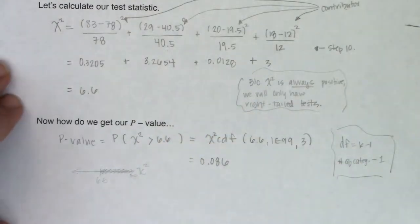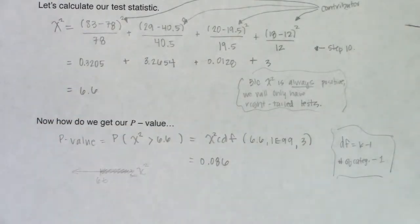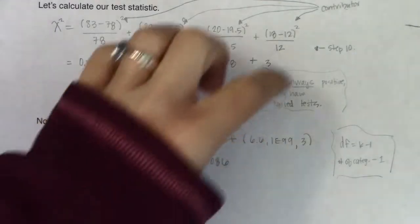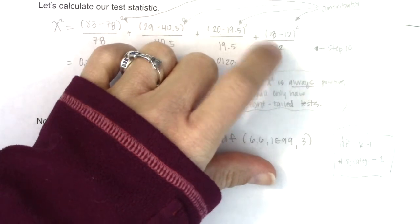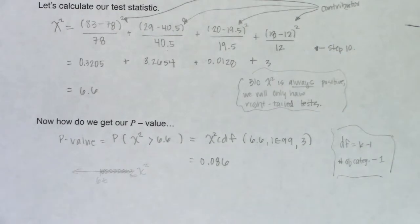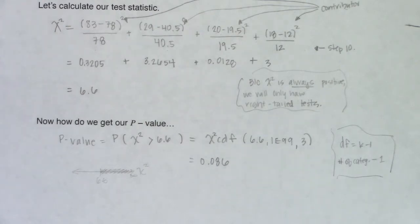With a p-value of 0.086 at the 1% alpha level, I fail to reject the null. I don't have enough evidence to conclude that the nut contents are different from the company's claims. It looks like just by chance it's possible to get this many extra Brazil nuts and fewer almonds. I can't say this company is lying. With that, we're going to pick up all the official terms for the goodness of fit test and then run a hypothesis test together.